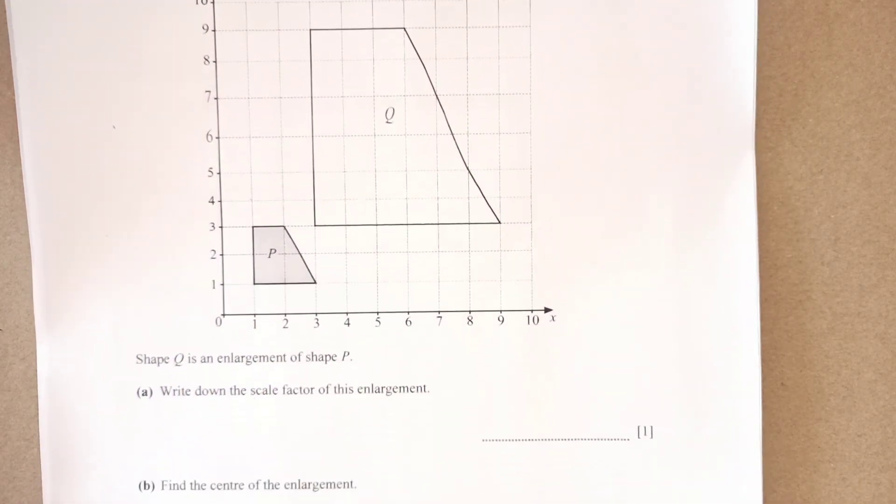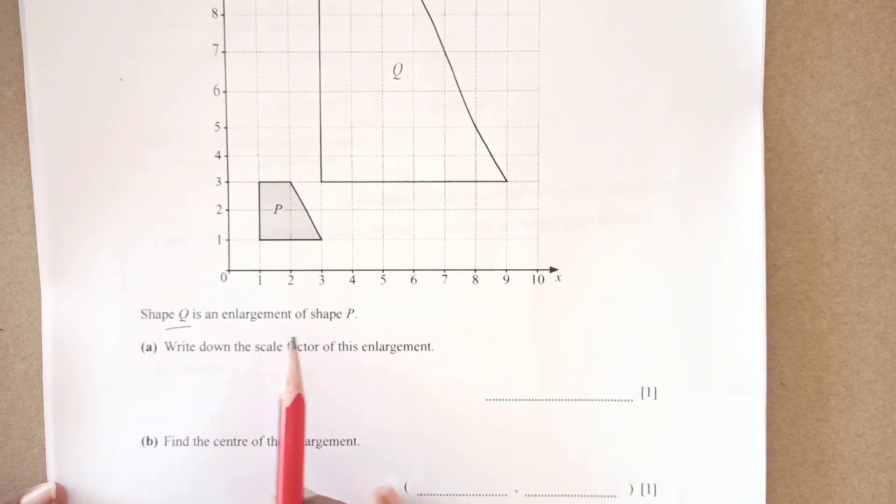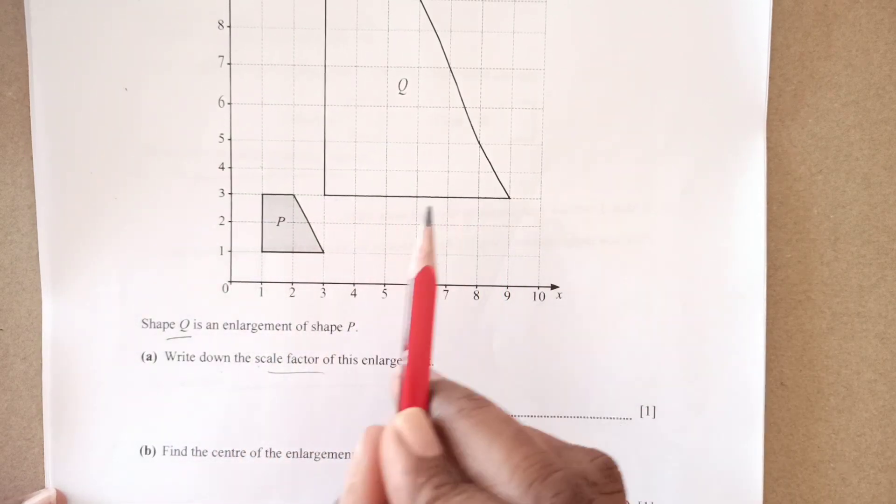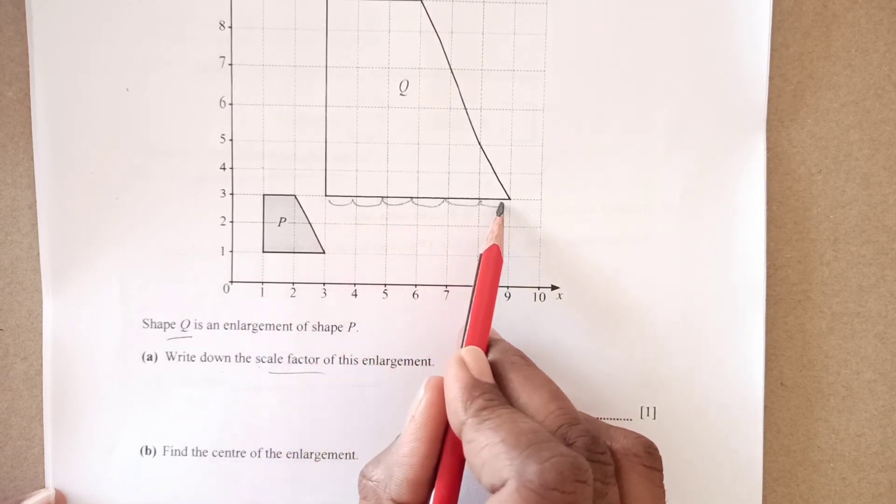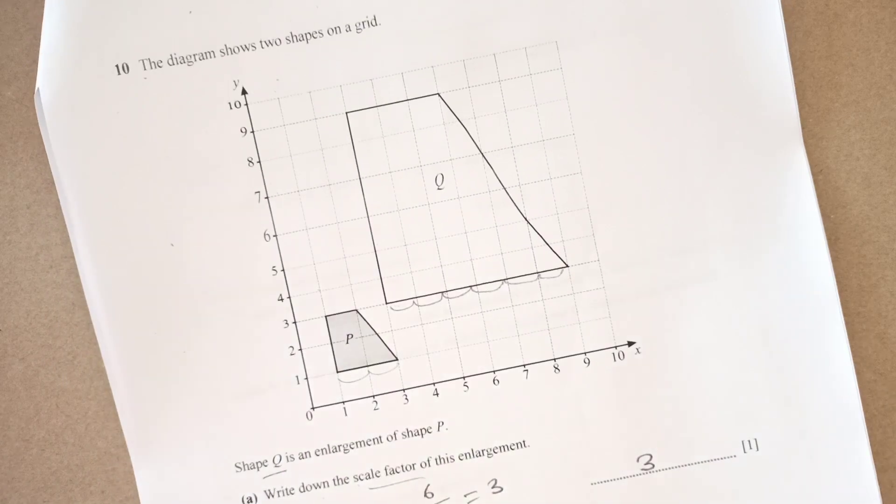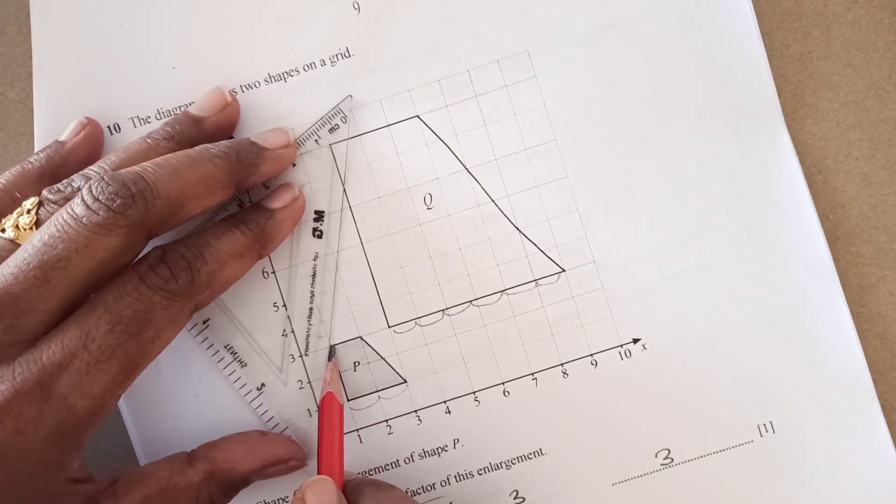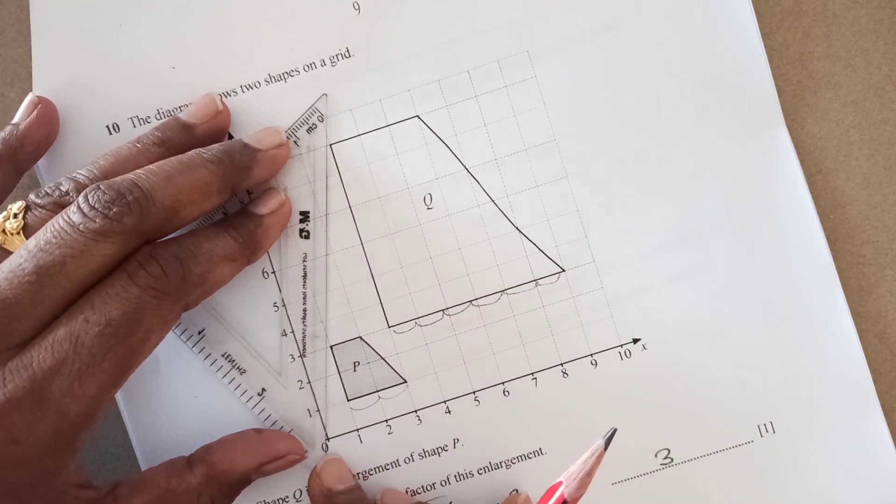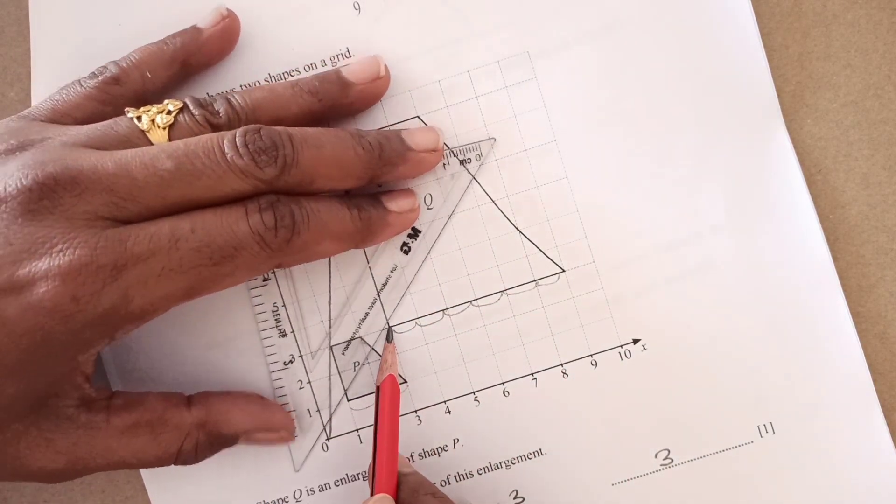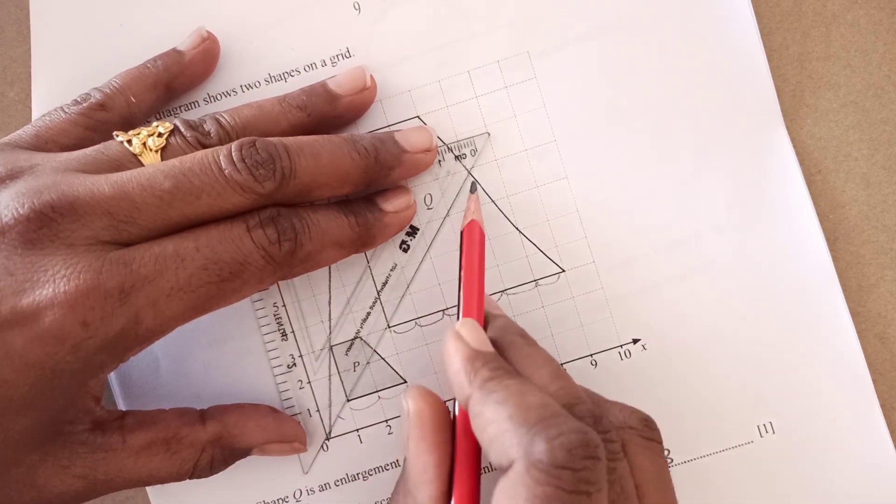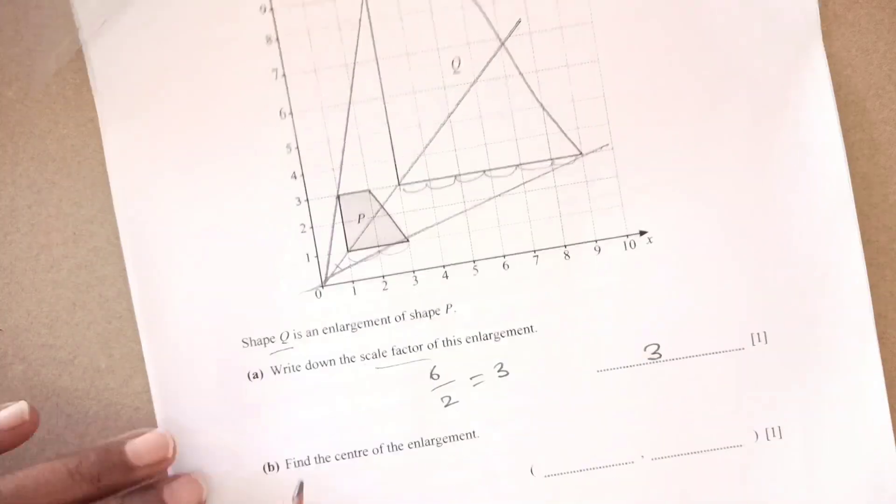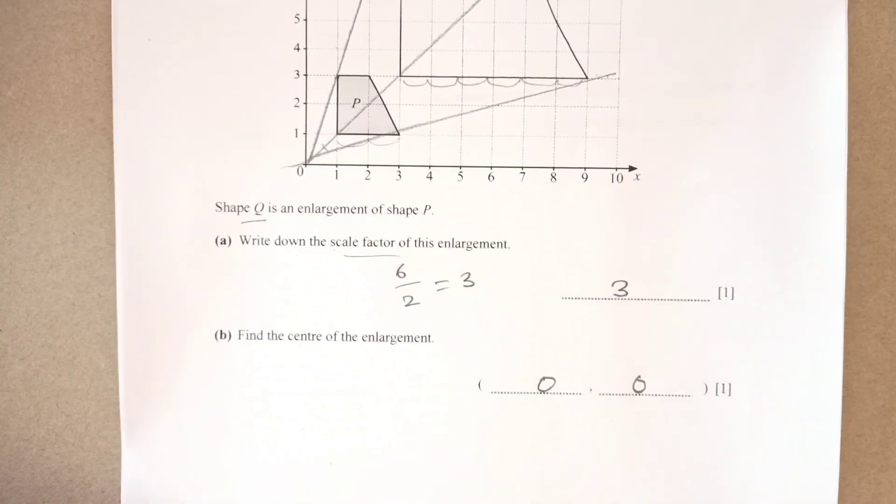Question number 10. The diagram shows two shapes on the grid. We have these two shapes. Shape Q is enlargement of shape P. Write down the scale factor of the enlargement. We will see count the number of squares of the bigger shape. This is 1, 2, 1, 2, 3, 4, 5, 6. 6 squares divided by we have here 2 square. Scale factor is 3. Now center of enlargement. For the center of enlargement, we are just going to join the corresponding vertices. I'm taking this one here. 2 or 3 are enough. It's ending at 0. Then we can have this the middle ones. You may have a dotted line here. You see they all are meeting at 0,0. Center of enlargement is 0,0.